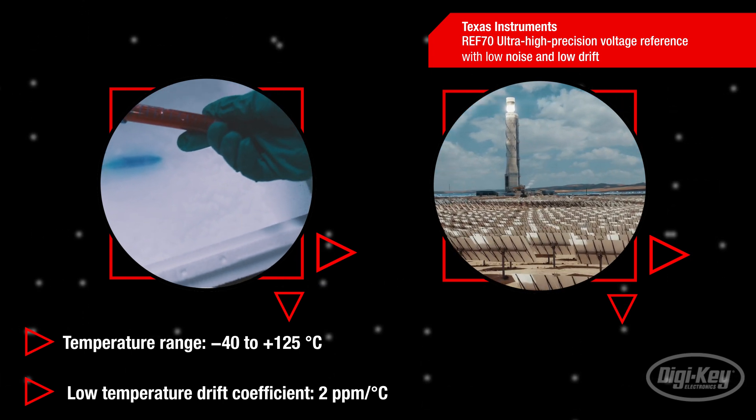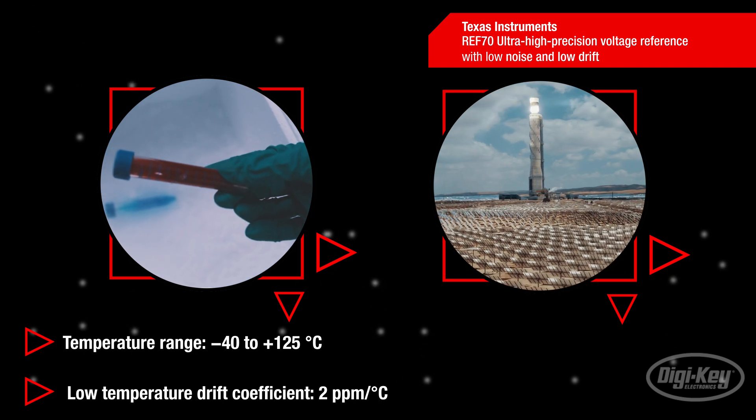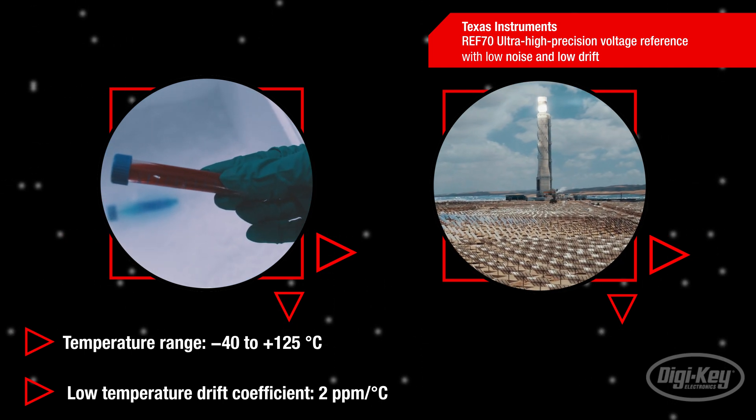In this range, REF70 family reference voltages provide a very low temperature drift coefficient of two parts per million per degrees Celsius.